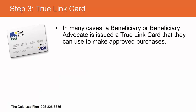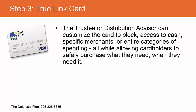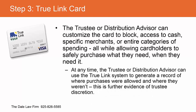A beneficiary or beneficiary advocate is issued a Trulink card they can use to make approved purchases. The Trulink card is a Visa card that combines the advantages of a credit card with the ability of the trustee or distribution advisor to impose important limitations on spending to protect the beneficiary's eligibility for benefits and ensure the card is not misused. The trustee or distribution advisor can customize the card to block access to cash, specific merchants, or entire categories of spending, while allowing cardholders to safely purchase what they need when they need it. The trustee or distribution advisor can use the Trulink system to generate a record of where purchases were allowed and where they weren't — further evidence of the trustee showing discretion.